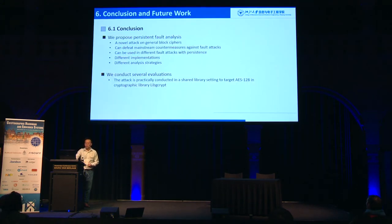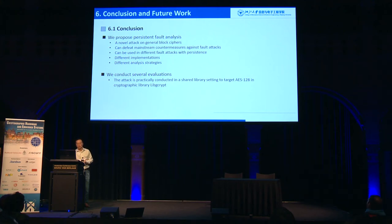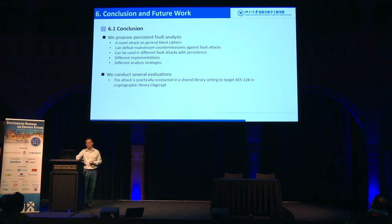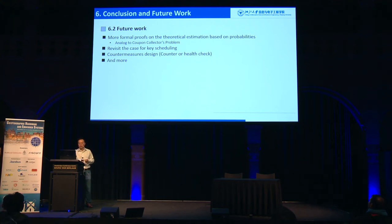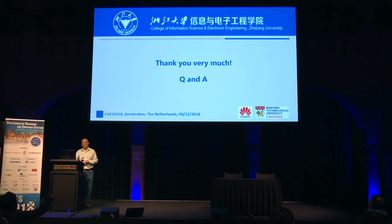In conclusion, we propose the persistent fault analysis, a novel attack that can defeat some fault countermeasures. We did various implementations, different analyses, and security evaluation. We demonstrated the rowhammer-based PFA on libgcrypt. Future work includes more formal proofs on the complexity side relying on the coupon-collector problem, exploring the case for key scheduling since the AES table lookup is also accessed there, and investigating additional countermeasures.